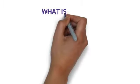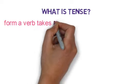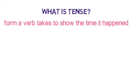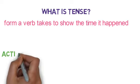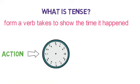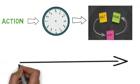What exactly is a tense? Tense is a form a verb takes to show the time it happened. It actually describes when any action happened with respect to time. Now, the time the action took could be past, present, or future.